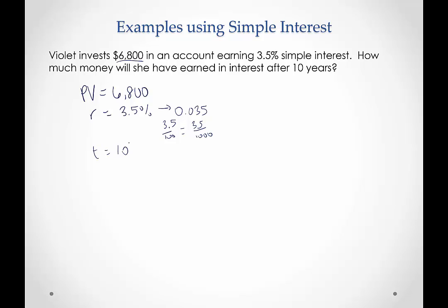So what are we asking for? How much money will she have earned in interest? So it says it's asking specifically for interest. So here we want to use the interest formula: I = PV × r × t. So we're just going to take these three numbers and multiply them: 6,800 × 0.035.